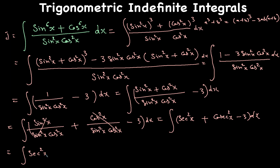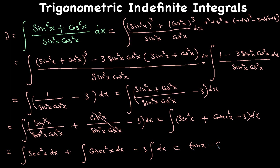Separating the integrals: the integral of sec²x is tangent x, the integral of csc²x is negative cotangent x, and the integral of 3 dx gives 3x. So the final answer is tangent x minus cotangent x minus 3x plus the constant. That was a lengthy problem but we got it done.